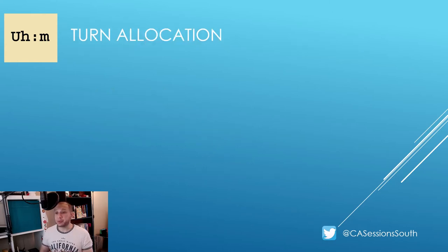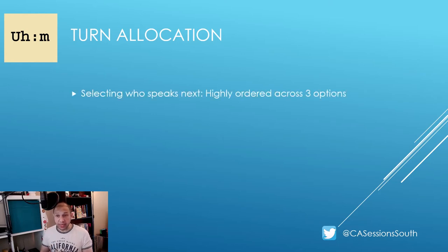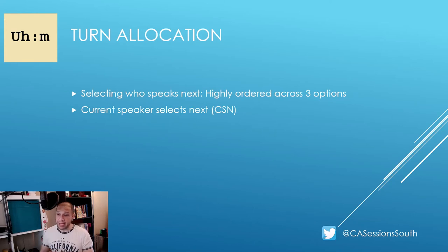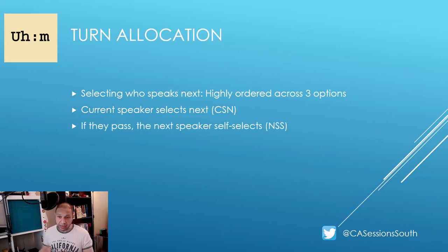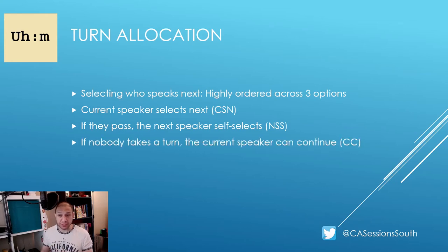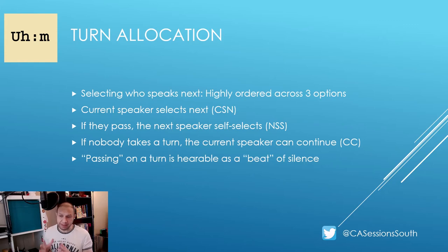The next concept in the management of turn-taking is that of turn allocation — this relates to the activity of selecting who speaks next, which is highly ordered across three distinct options. The current speaker can select the next speaker through an address term, an embodied action such as a glance or a gesture, or the selection can be tacit and understood from the prior turns. If the selected speaker passes on their turn, the next speaker can self-select to initiate a turn to a de facto open floor. If nobody self-selects, the current speaker may continue. Passing on a turn can be heard as a beat of silence, just long enough that speakers can orient to the possibility that the opportunity to take a turn has been passed.